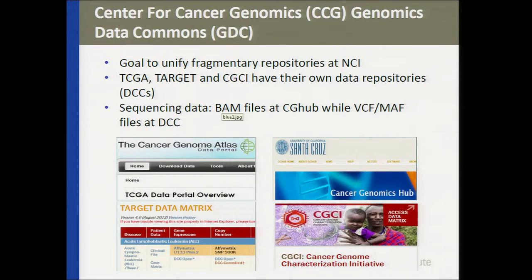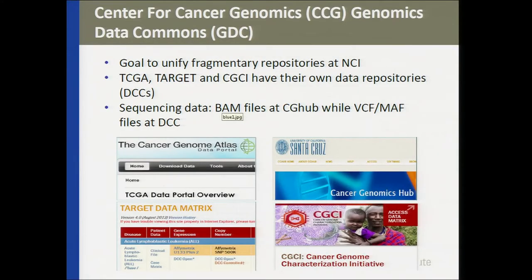This is kind of confusing for users to have all of this data generated from the same CCG, from the same division, in so many different locations. So the goal of our Genomic Data Commons, or the GDC, which is currently in production, is to unify this fragmentary repository at NCI so that all of the cancer genomics projects at the CCG, and in the future all NCI projects, will be available from a single repository.